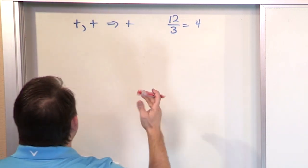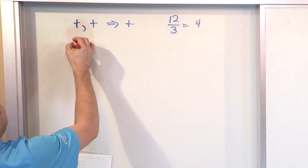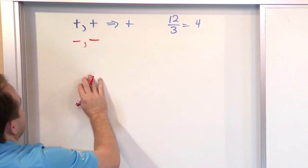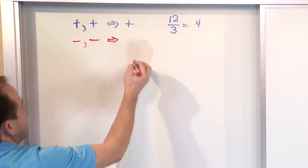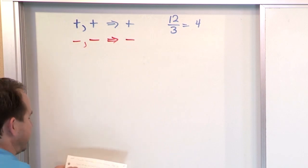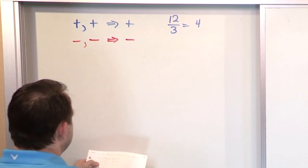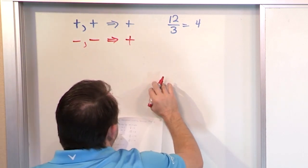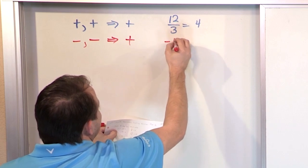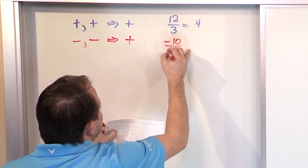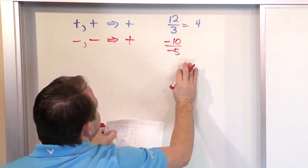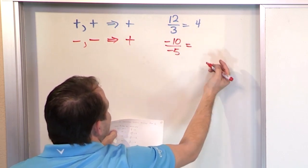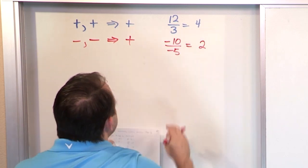But again, if you have a negative sign divided by a negative sign, just like with multiplication, you'd expect to get a positive answer. And that's what you get with division. Negative 10 divided by negative 5 gives you 2, but it's going to be a positive 2.